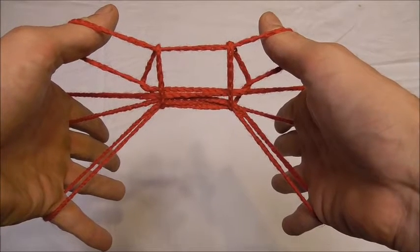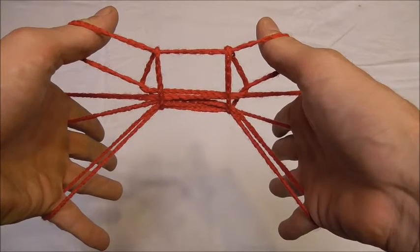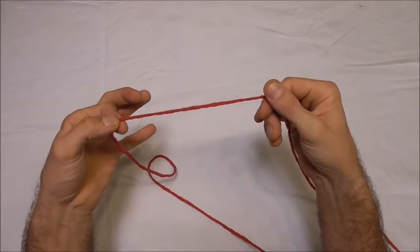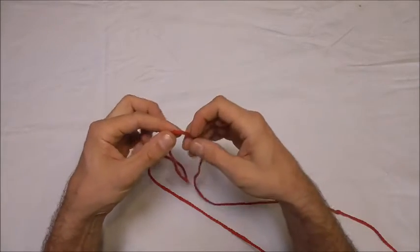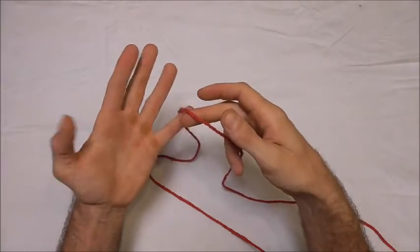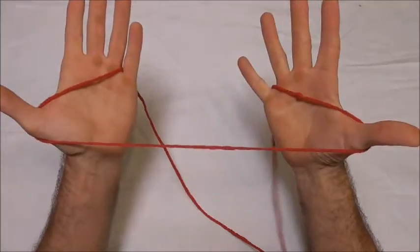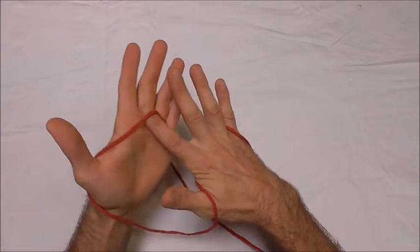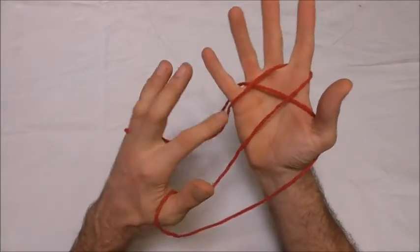Hi everyone, today's string figure is a little crab. We're going to use a medium loop of string to make this string figure and we're going to start off by draping the string across our palm on both hands and then picking up the palm string with our index finger.